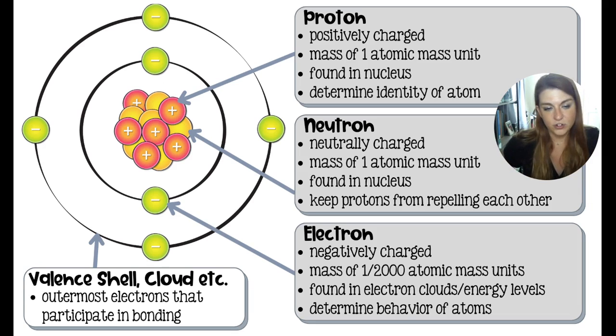The valence electrons are the ones that participate in bonding. So in water, when a hydrogen wants to bond to an oxygen to make water, those valence electrons are the only things that are participating in that chemical bond. So the valence electrons are super important.